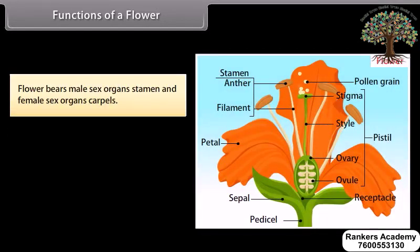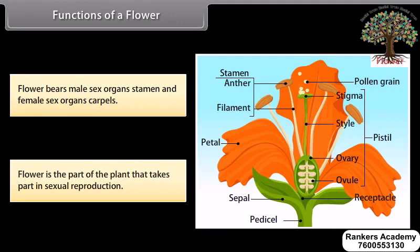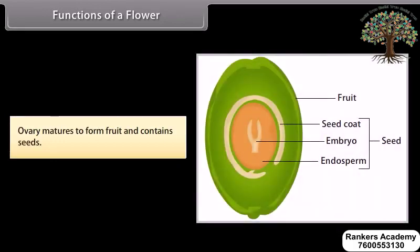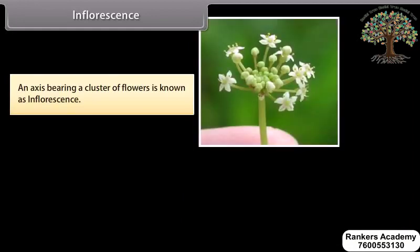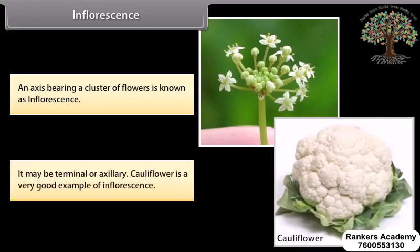Functions of a flower: A flower bears male sex organs (stamens) and female sex organs (carpels). The flower is the part of the plant that takes part in sexual reproduction. The ovary matures to form fruit and contains seeds. Inflorescence: Flowers do not always occur singly — flowers which are small in size often occur in clusters. An axis bearing a cluster of flowers is known as inflorescence. It may be terminal or axillary; cauliflower is a very good example of inflorescence.